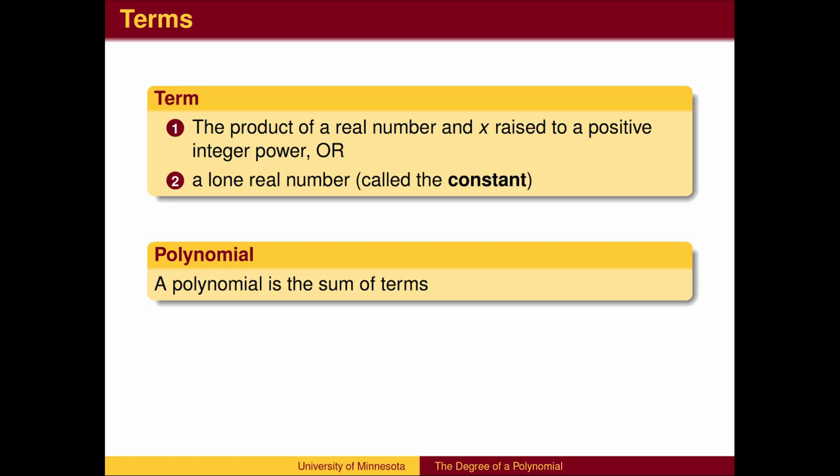A polynomial is the sum of terms. In other words, it is a bunch of terms added together. Note that subtraction is also allowed because the real number part of a term can be a negative number.